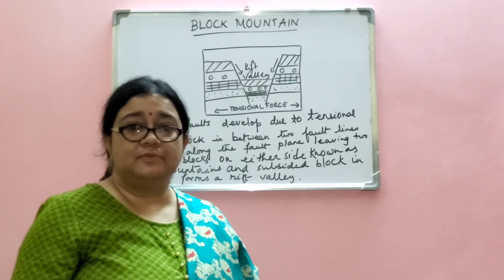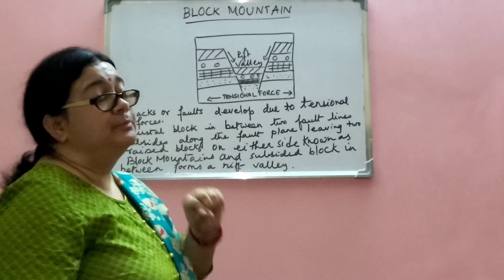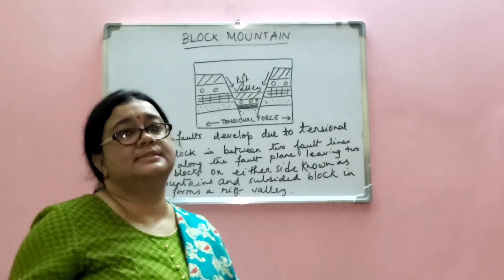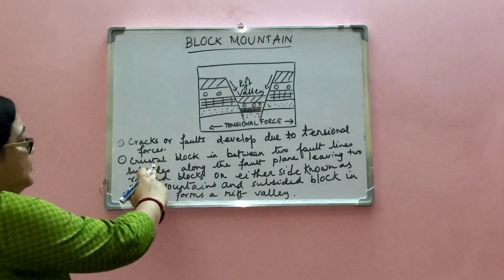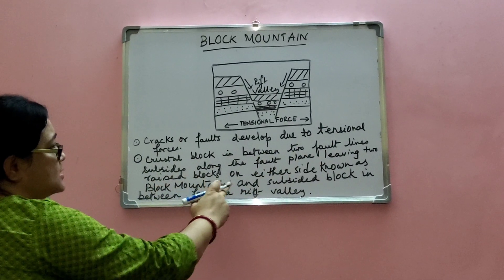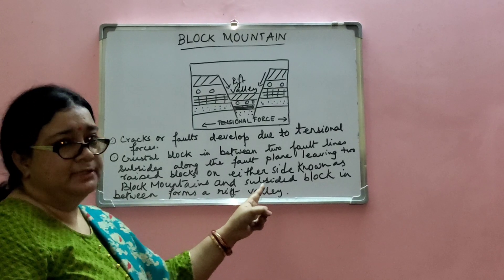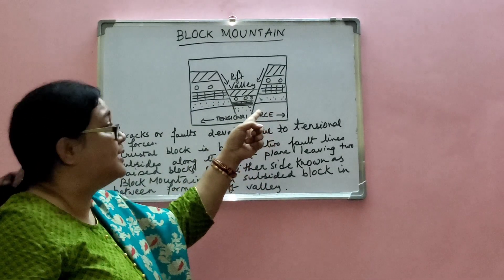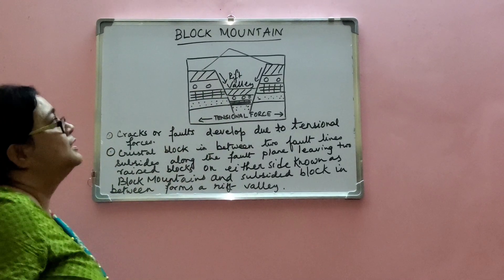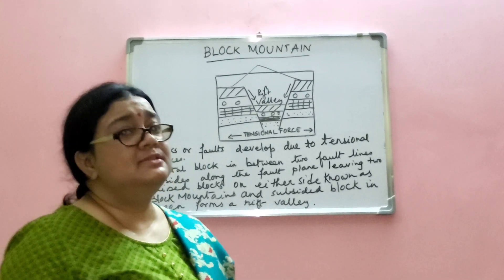In the formation of fold mountains, compressional forces are very important, but in the case of block mountains, tensional forces are very important because cracks or faults develop due to these tensional forces. A crustal block between two fault lines subsides along the fault plane, leaving two raised blocks on either side known as block mountains, while the subsided block in between forms a rift valley. Examples of block mountains are the Vindhyas and Satpuras.